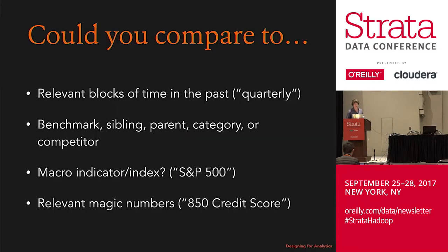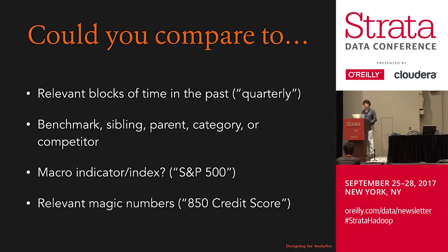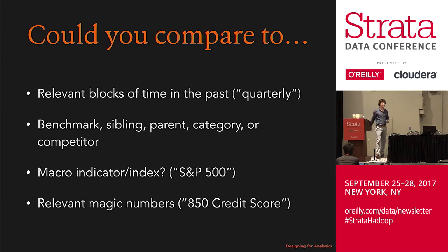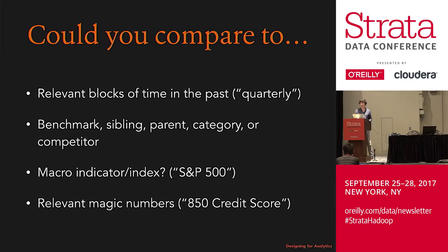Some other things to think about when providing comparisons in your product: relevant business or consumer cycles — not just arbitrary time periods. Benchmarks, sibling objects, parent objects, categories, competitors, indices. Obviously in finance you see indices a lot, but there might be meaningful indices within your own market. And what I call magic numbers — golf has 72 as par, your credit score has 850. If your industry has magic number values, you might be able to use those as comparisons to help people put their information into context.